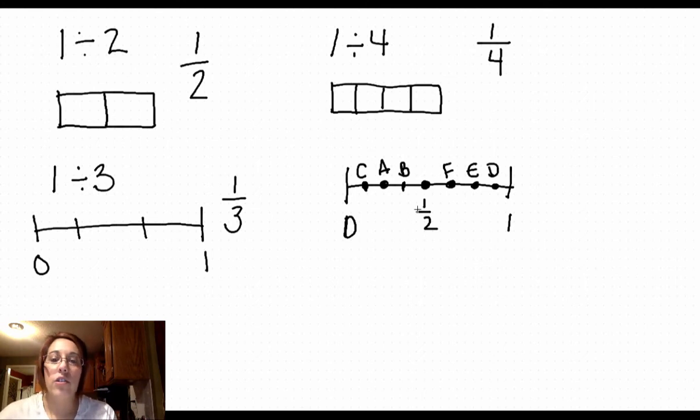So if I ask you to identify, what was that point B? You would look and say those are eighths, so 1 eighth, 2 eighths, 3 eighths. And you would write the fraction 3 eighths.